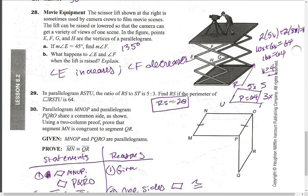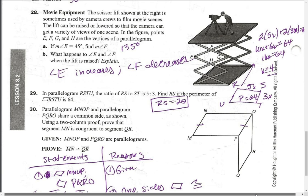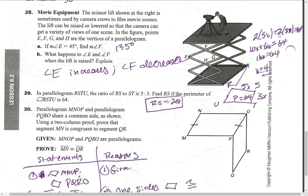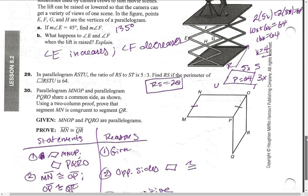In parallelogram RSTU, the ratio of RS to ST is 5 to 3. Find RS if the perimeter is 64. Here's the parallelogram: 5x to 3x, perimeter is 64. So 2 times 5x plus 2 times 3x equals 64. Solve the equation, x equals 4, so RS is 20.